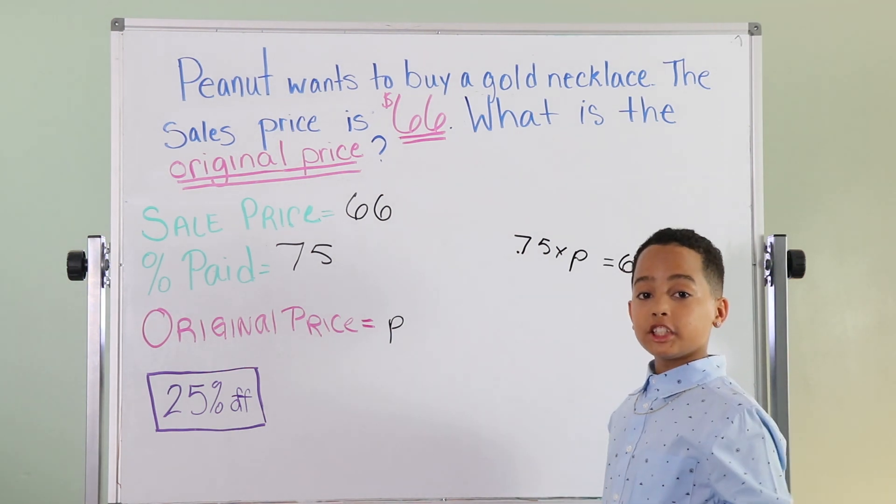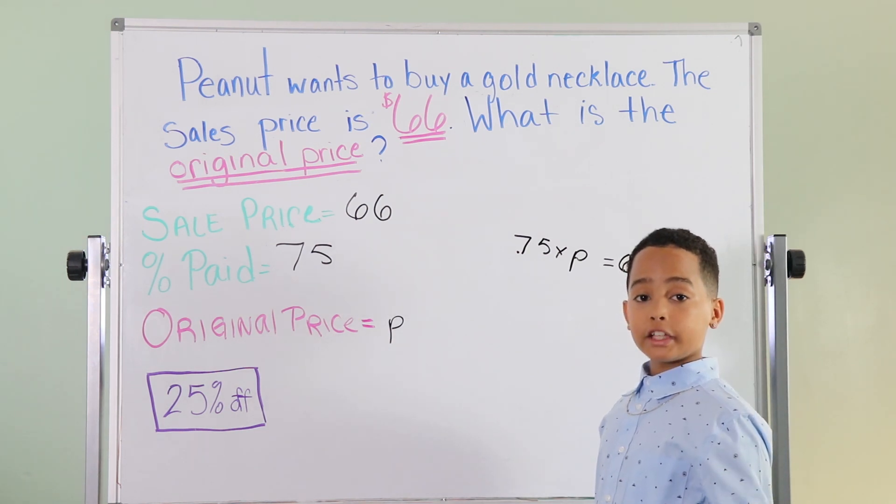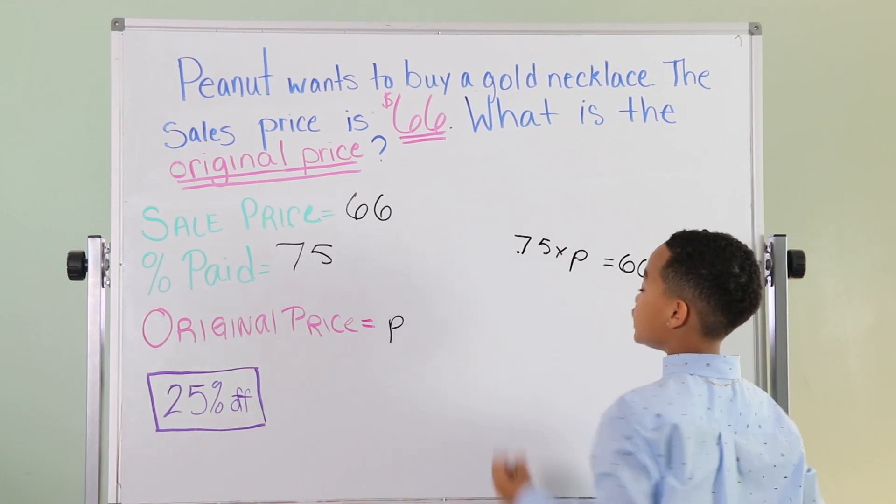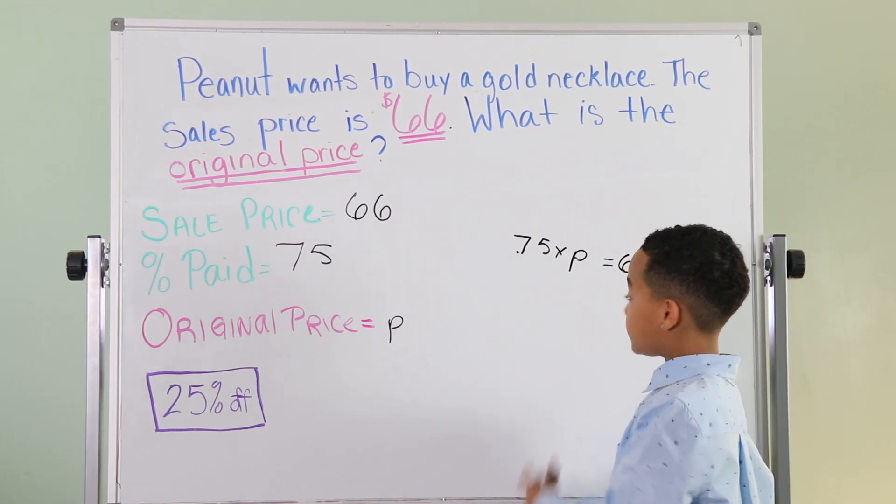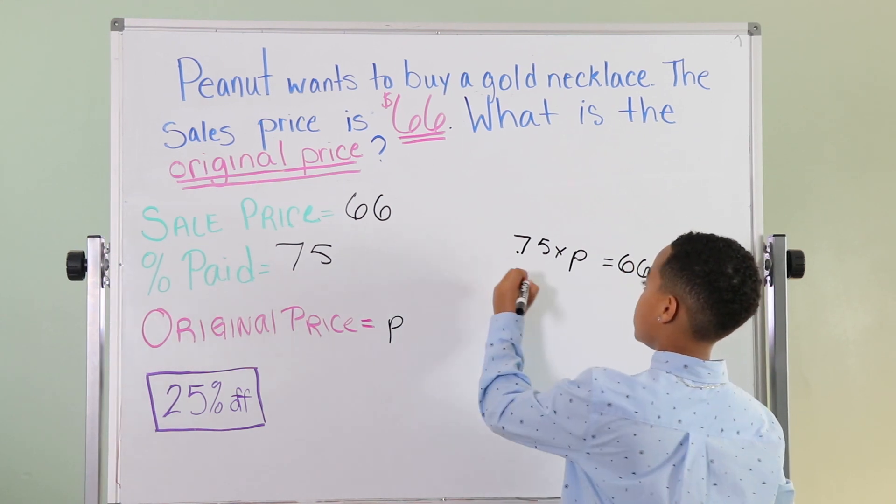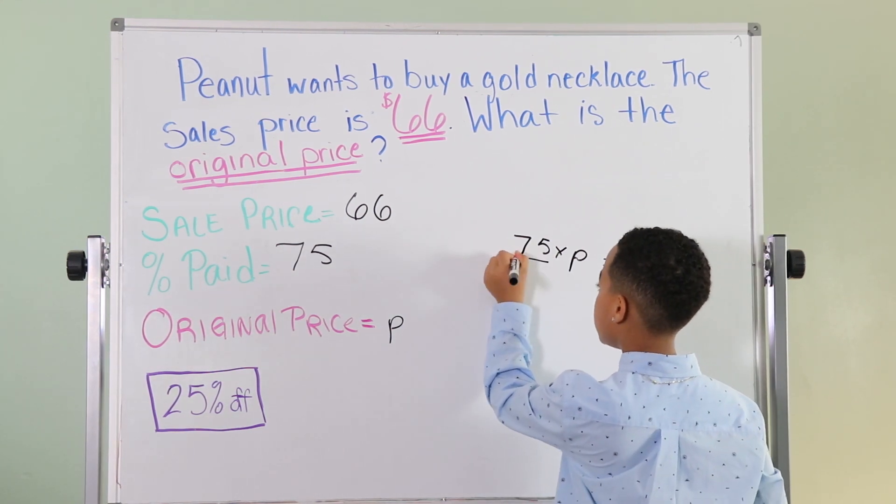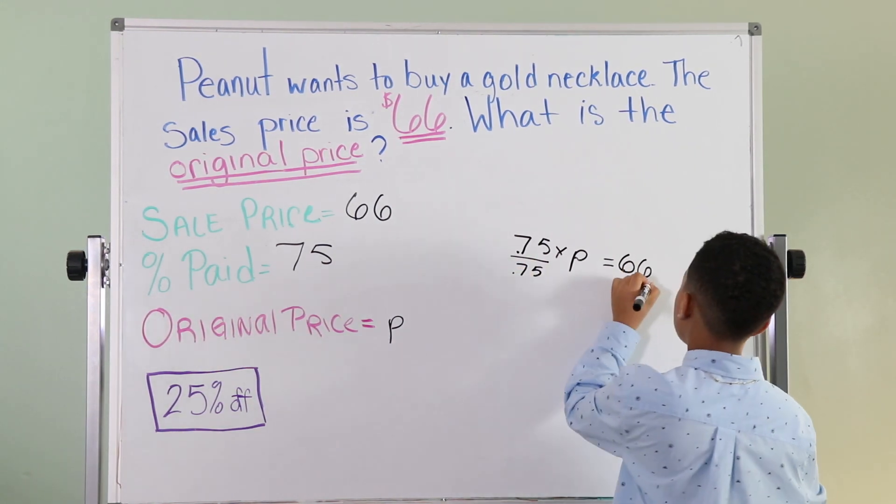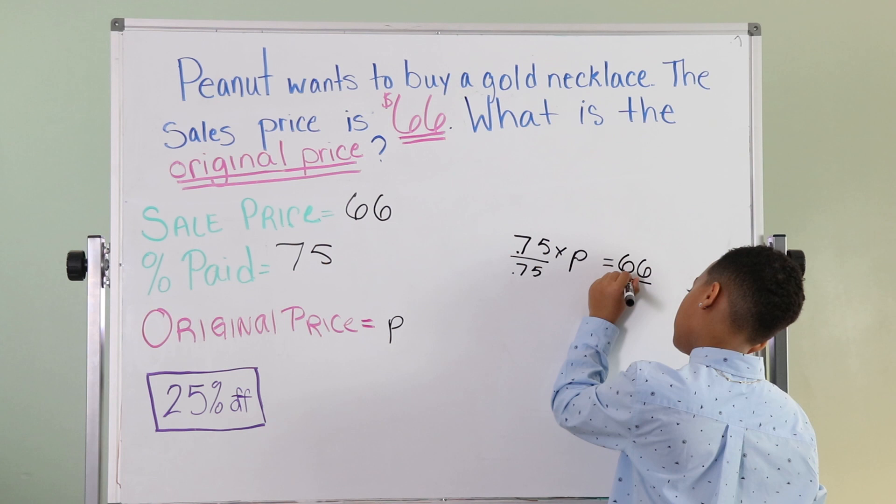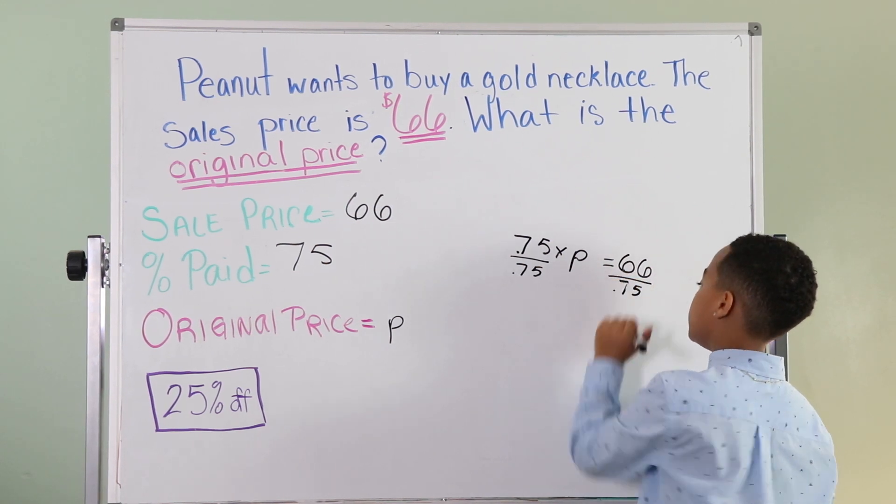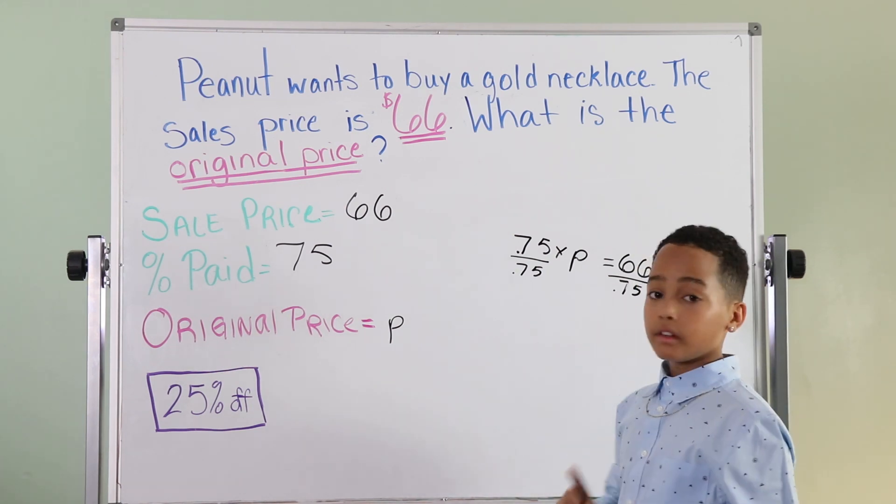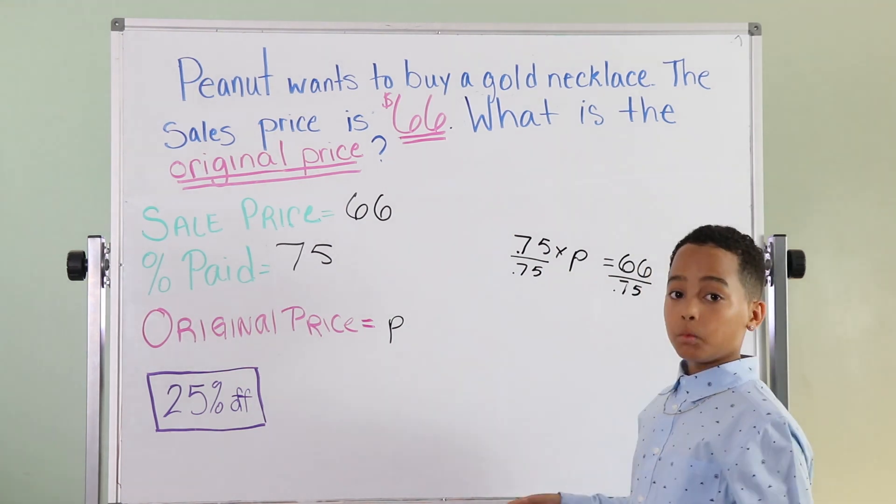Now what we're going to do is inverse operations. I did a video on it and solved it for x. You might want to go check that out. Now, the inverse operation of multiplication is division. So we're going to divide everything by 0.75. Now, we're going to automatically cancel this out because that would just be 1 and 1 times P would just still be P.